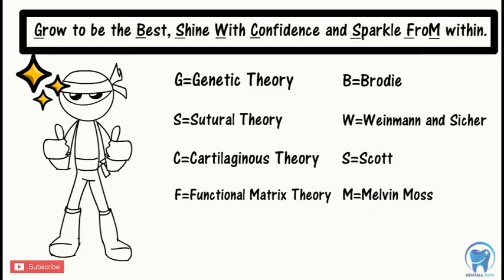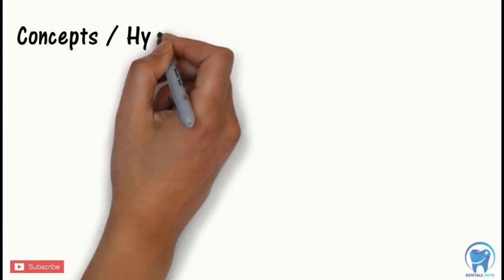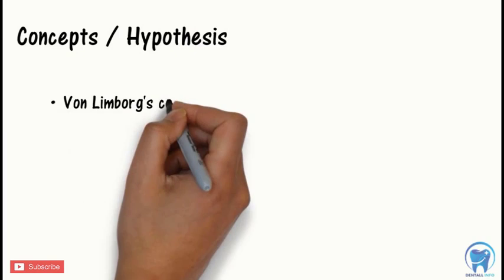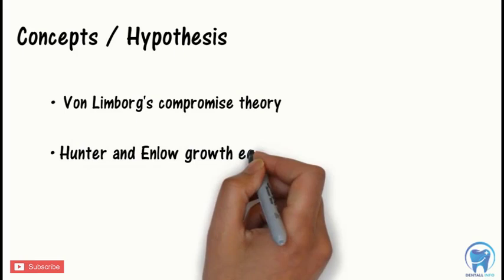Some concepts or hypotheses were also proposed to explain growth, which include the Von Limburg's Compromise Theory, Hunter and Enloe Growth Equivalent Concept, and Petrovic's Cybernetics Theory.